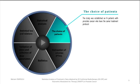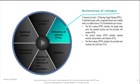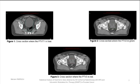The first is the choice of patients. The study was established on 14 patients with prostate cancer who have the same treatment protocol. The second step is delineation of volumes. Each PTV corresponds to a delineation of a very precise volume. The target volumes called in radiotherapy planning target volume PTV, which were irradiated named PTV1, PTV2, PTV3, correspond respectively to the volumes which received a dose of 46 Gray, 54 Gray, and 74 Gray. We can see this delineation by transverse cuts removed from the TPS, which corresponds to the treatment planning system.